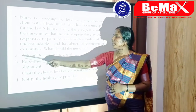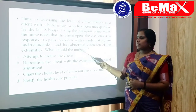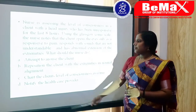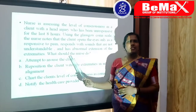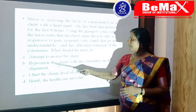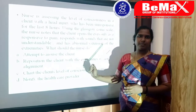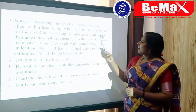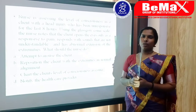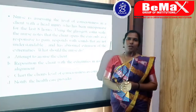Let's look at the other options. Option A — attempt to arouse the client — is incorrect because the patient is unresponsive, and attempting to arouse them will yield no reaction. Option B — reposition the client with extremities in normal alignment — is incorrect because the patient shows abnormal extension of the extremities and repositioning would not address that. Option D — notify the healthcare provider — is also incorrect because the patient was already known to be unresponsive with no significant change in GCS score, so there is no need to notify the HCP. The correct answer remains Option C: chart the client's level of consciousness as coma.